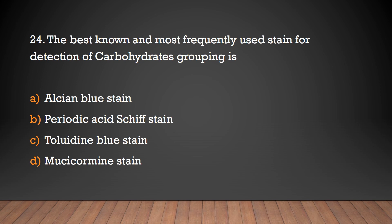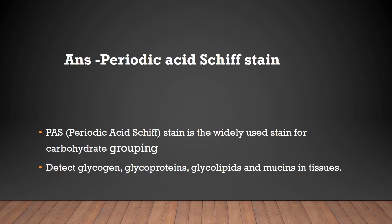The best known and most frequently used stain for detection of carbohydrate is: Alcian blue stain, Periodic Acid-Schiff stain, Toluidine blue stain, or Mucicarmine stain? The answer is Periodic Acid-Schiff stain.